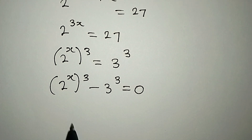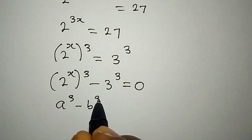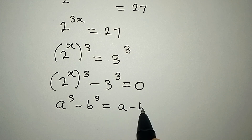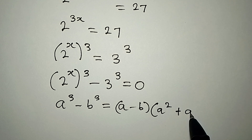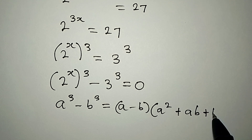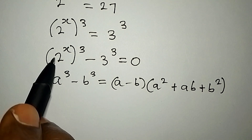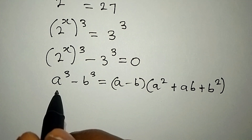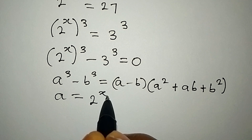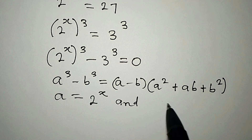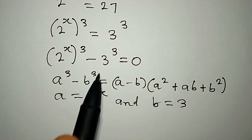Now what do we do? Recall that if you have a to the power of 3 minus b to the power of 3, this is the same thing as (a minus b) times (a squared plus ab plus b squared). So if this is correct, then we are going to express this in this form, saying that our a is equal to 2 to the power of x, and our b is equal to 3.